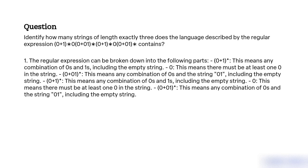The regular expression can be broken down into the following parts. First, (0+1)* — this means any combination of zeros and ones, including the empty string. Second, 0 — this means there must be at least one zero in the string. Third, (0+1)* — this means any combination of zeros and ones, including the empty string.